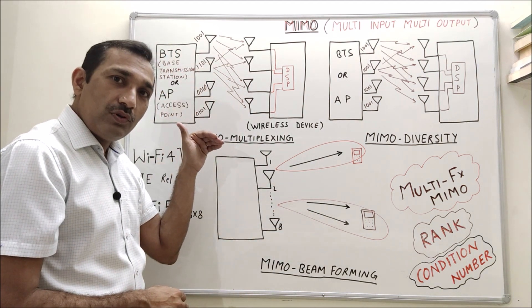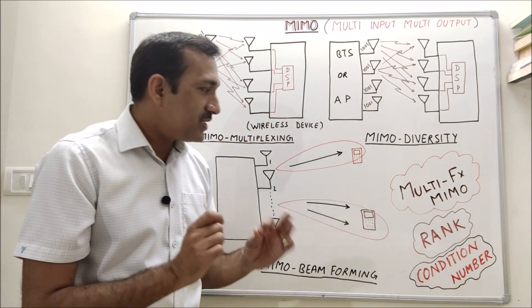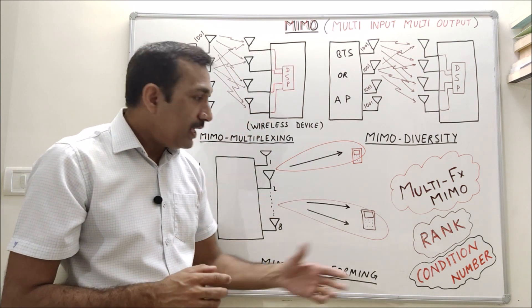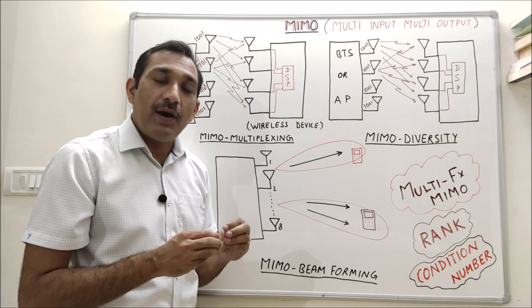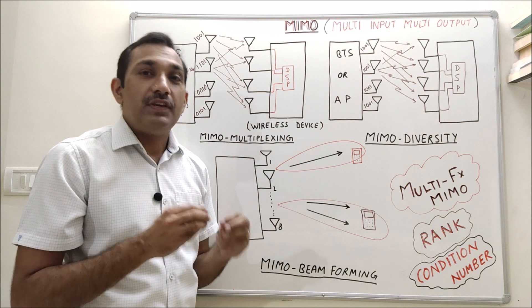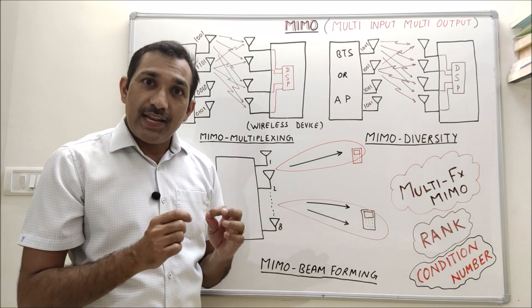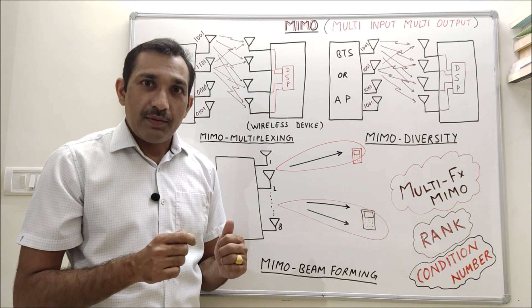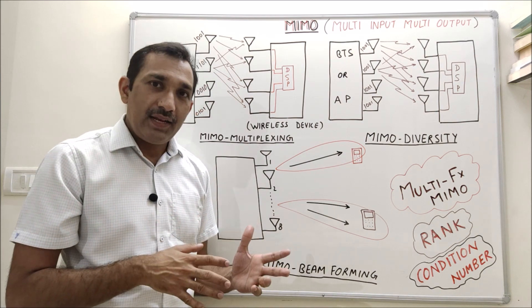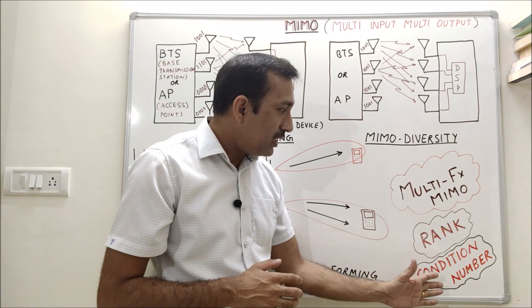Now what is rank? Rank is number of streams which are transmitted over the channel. That means here we can have rank up to 4: it can be rank 1, 2, 3, 4. Last one is condition number or CN number. Condition number is measured in dB. This gives us the information about channel condition, how good is channel condition where we can use spatial multiplexing.